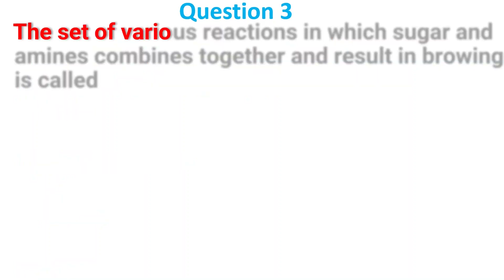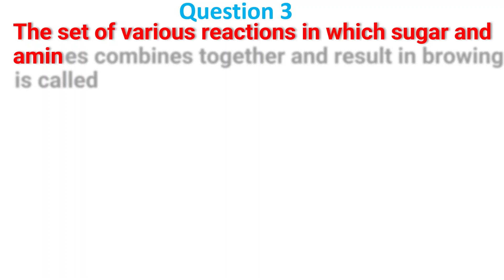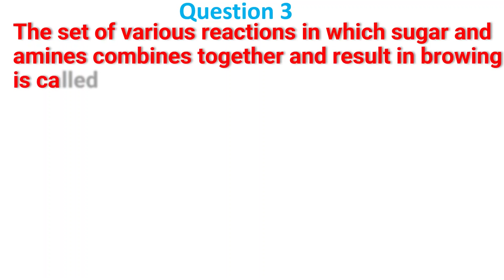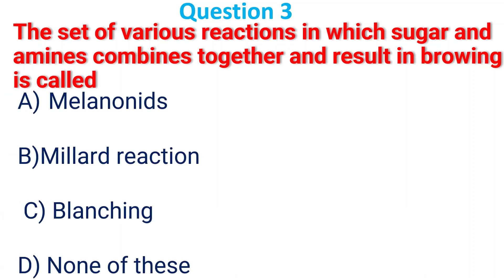The set of various reactions in which sugar and amine combine together and result in browning is called: A. Melanoids; B. Maillard reaction; C. Glian chick; D. None of these. The answer is B, Maillard reaction.